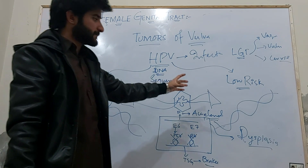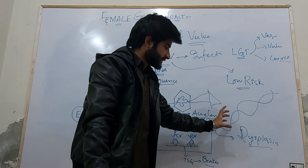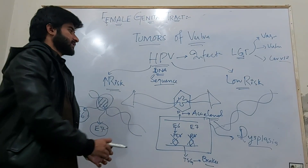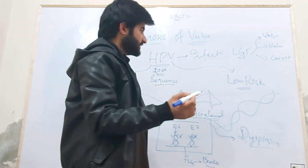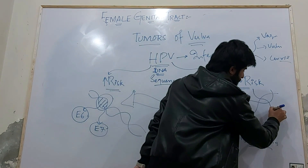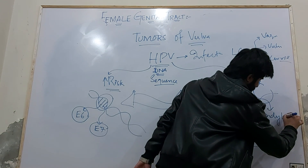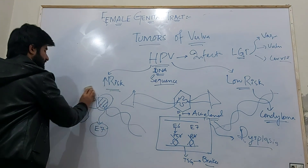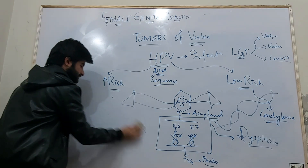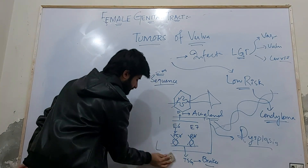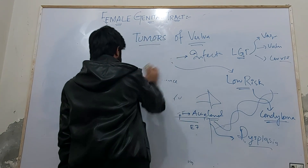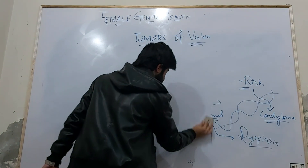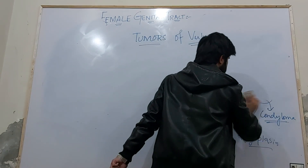A low-risk human papilloma virus does not result in dysplasia. Instead, when a low-risk human papilloma virus infects you, it will result in the condition called condyloma. So our first tumorous condition to study is condyloma. High-risk HPV will progress to carcinoma, whereas low-risk HPV will cause condyloma.